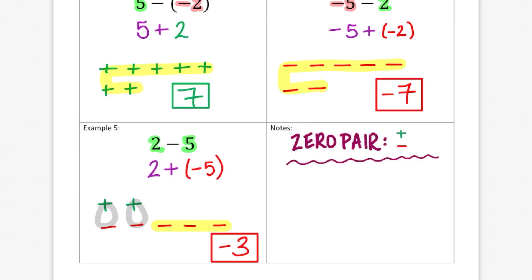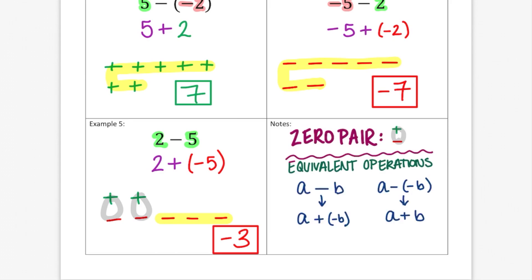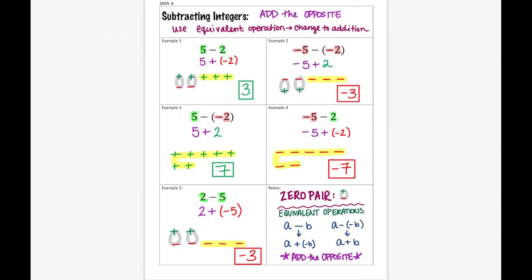So to wrap this up with a few notes: a zero pair means you have a positive and a negative, and their sum adds up to zero. When it comes to subtraction, the best thing to do is use your equivalent operations — change them into addition by adding the opposite. Then it's a lot easier to use your counters. That's it for today's lesson. I'll see you next time.